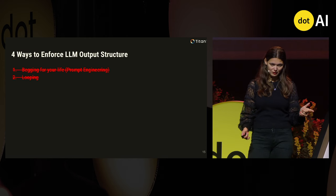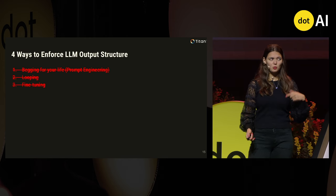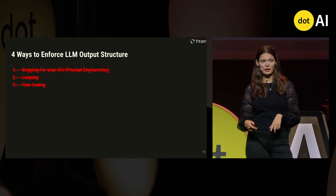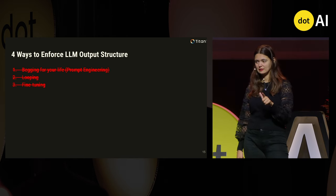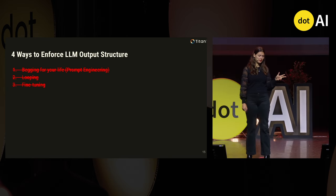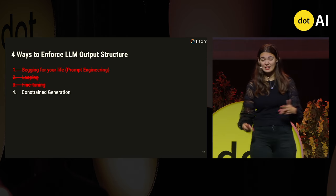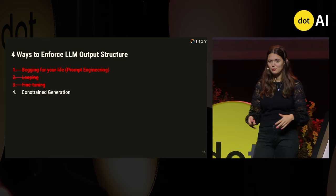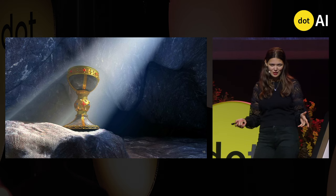We don't love begging for your life, looping, or fine tuning. What if there was a way to enforce LLM behavior with minimal latency overhead, 100% certainty of working all of the time, and — most importantly — happening at inference run time so you can change it on the fly? That's what constrained generation is. When it comes to outputting structured formats, it's kind of the holy grail. We get 100% accuracy for the schema we want, minimal latency increases, all at inference time.